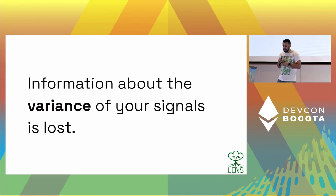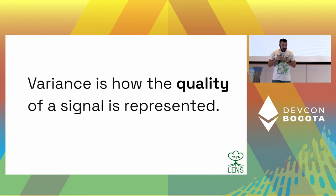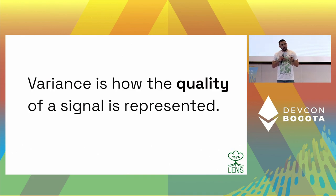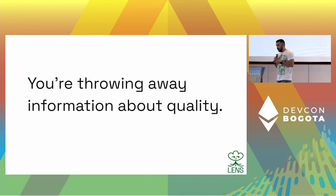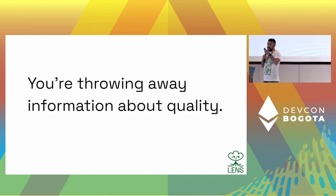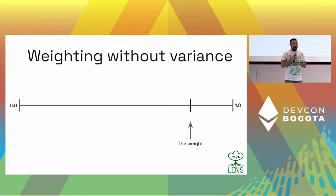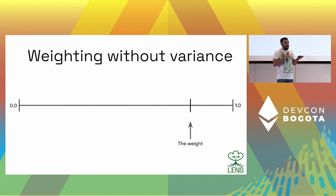I think this is less than ideal, and I'll explain why. Information about the variance of your signals is lost when you do this, and variance is important to know because it's a measure of quality — it's how you represent the quality of the signal. Throwing away the variance means you're throwing away quality information. You don't know if your final reputation is coming from lots of low quality signals or a combination of high and low. Without variance, it's just one number — maybe 0.8 — and that's really all you get.